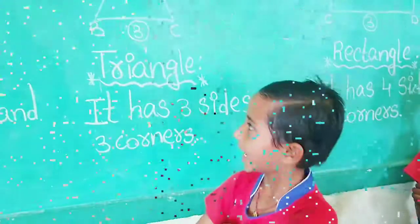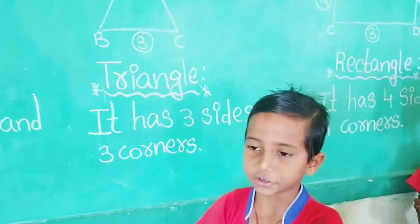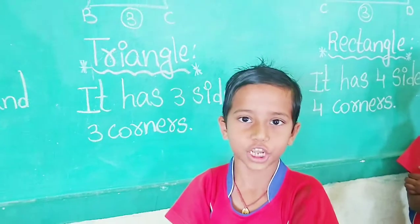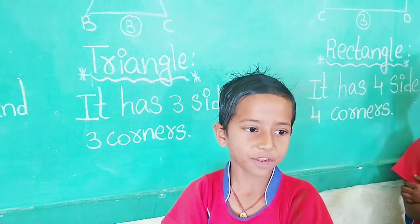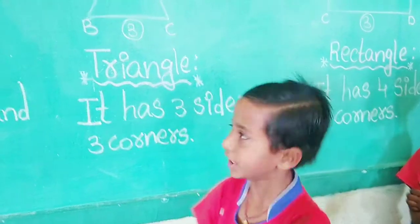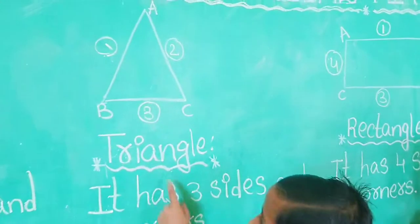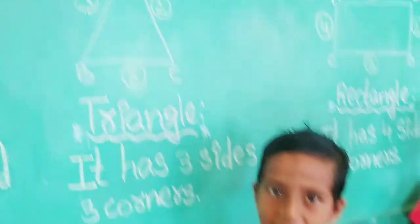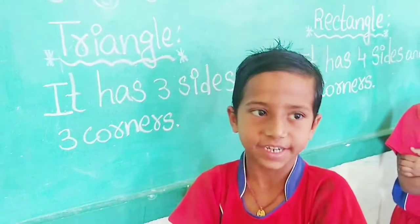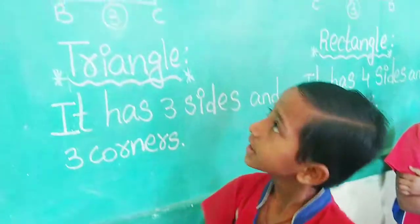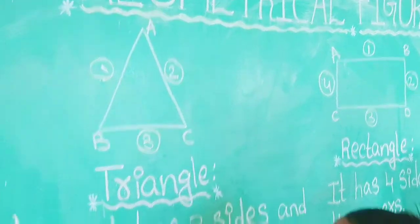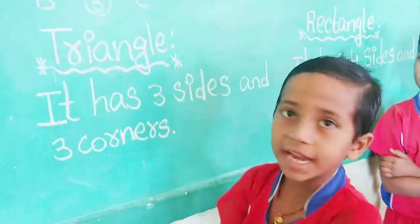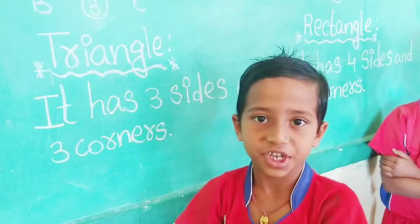Hi, my name is Suman. Today I am going to tell you about geometrical figures. My figure name is triangle. A triangle has 3 sides: Side 1, Side 2, Side 3. And it has 3 corners.